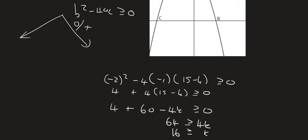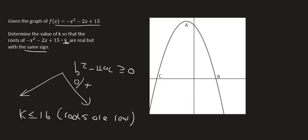So k must be smaller than or equal to 16. If k is smaller than or equal to 16, then it means that the roots are real. Now I need to explain quite a bit. What we need to look at is where k was in the very beginning. k was over here. Now what letter do we usually have over there? Well, that's usually f of x or we also know that f of x is the y. So k is a y value.